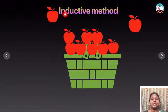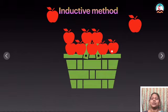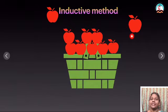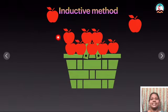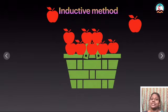Sometimes the conclusion may be wrong. This is logically true because I have taken one apple — it is good — and I have taken another apple — that is also good. So I am giving the conclusion that all the apples are good in the basket. Sometimes it is logically true, sometimes it may not be true. But this is called the inductive method.